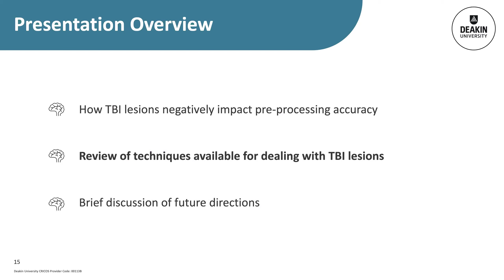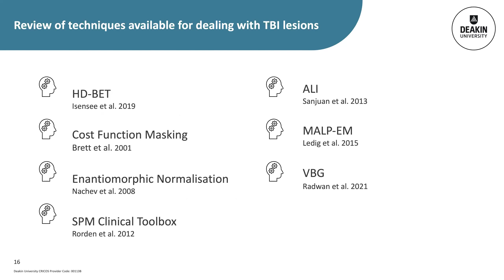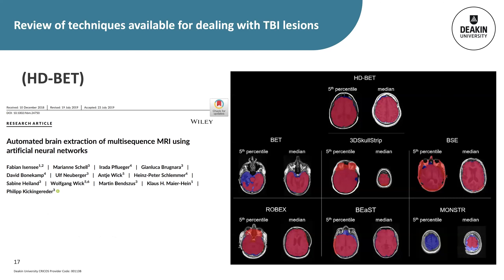Having outlined how TBI lesions produce focal and global errors at each step of image pre-processing, I'll briefly outline some proposed methods for better dealing with lesions during pre-processing. The seven freely publicly available tools I will cover each have individual strengths and limitations in the context of TBI lesions. Recently, Isensee and colleagues used an artificial neural network trained on both healthy brain scans and neuro-oncology patient scans to improve brain extraction in the presence of pathology. Their method, termed HD-BET, outperformed six other popular brain extraction tools and was robust to pathology, variations in MRI hardware, acquisition parameters, and a range of MRI sequences.